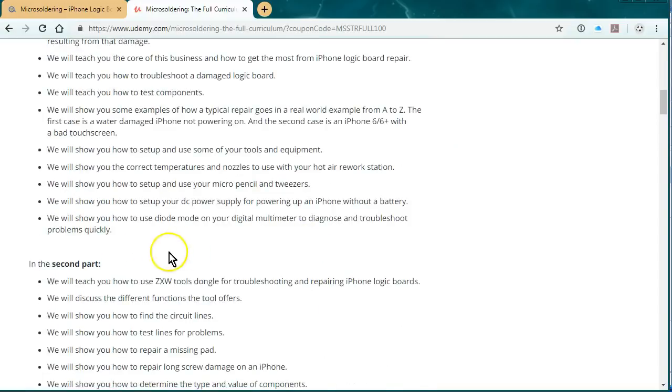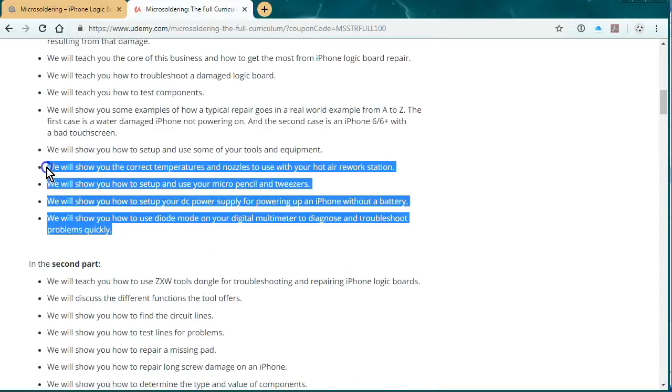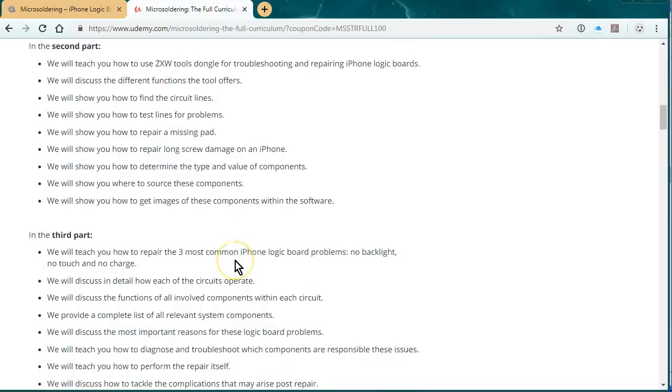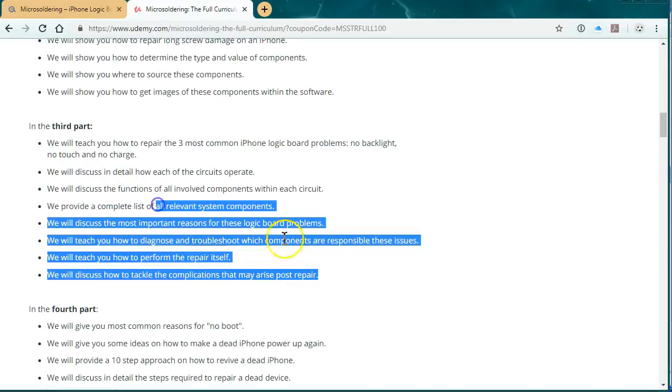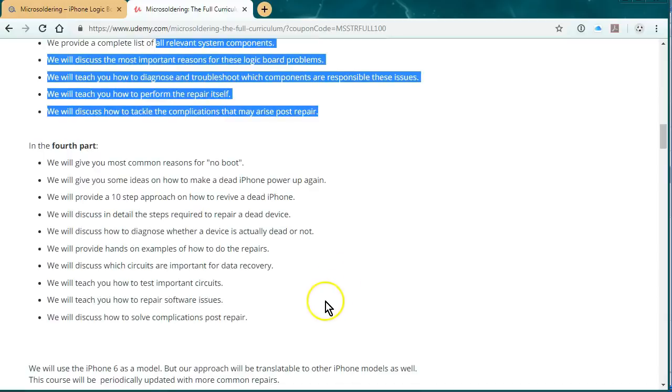We have a little section about how to set up your hot air rework station, your micro-soldering station, and how to use diode mode. The third part is the three most common repairs, which is no touch, no backlight, no charge. And the fourth part is all about data recovery.